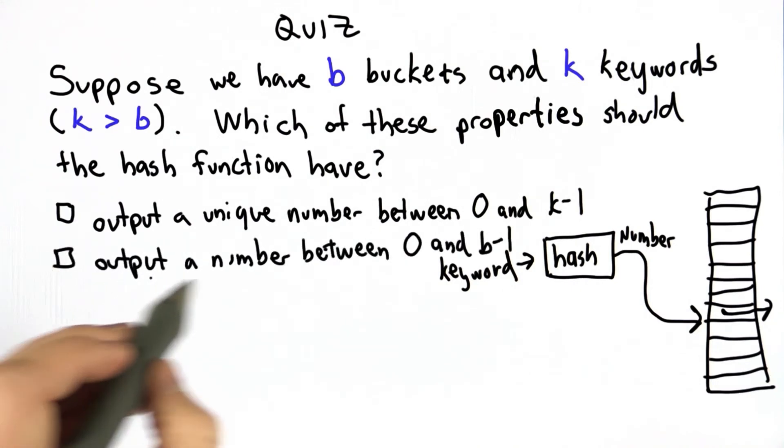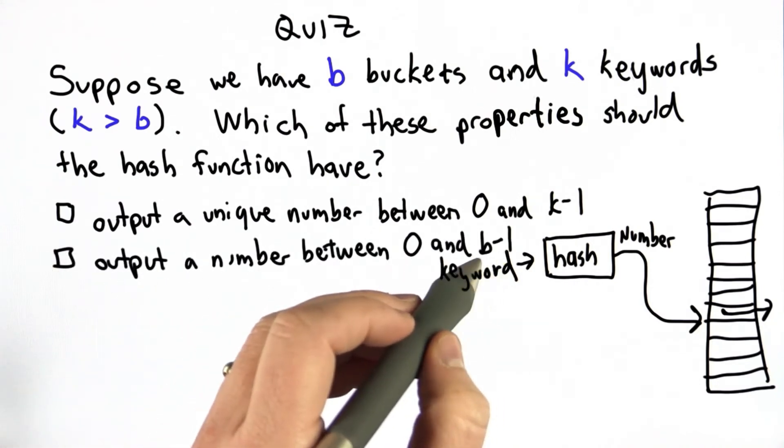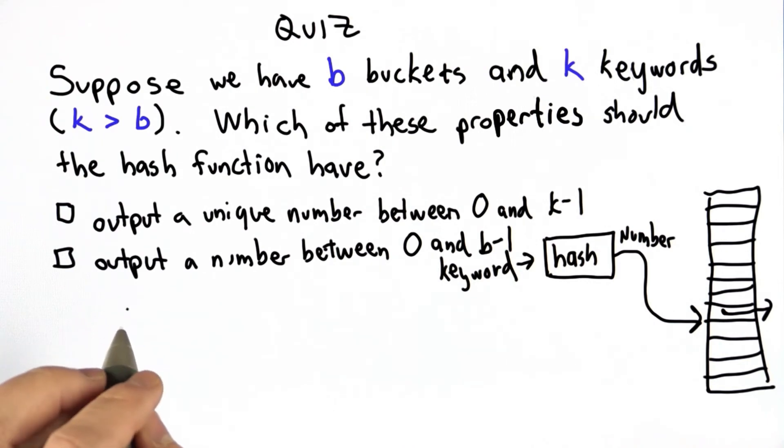The second choice is output a number between 0 and b-1, the number of buckets that we have.